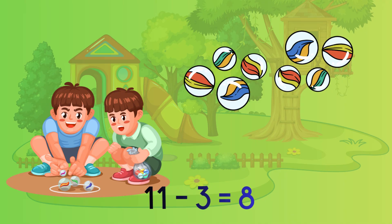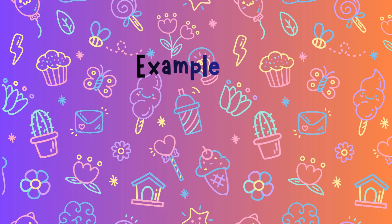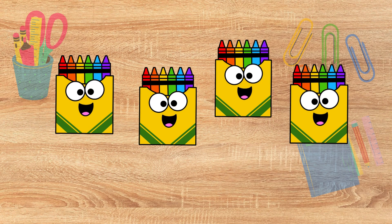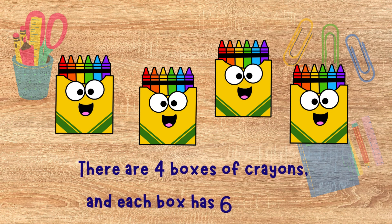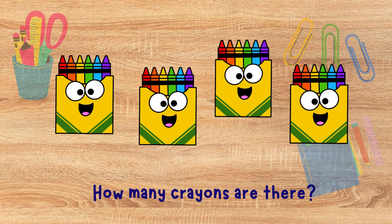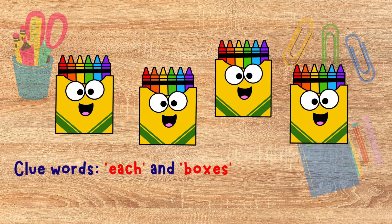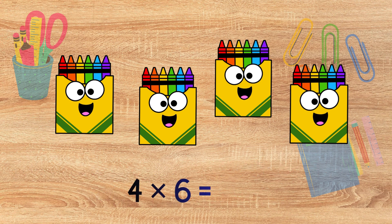Nice work! Example 3, Multiplication Problem. There are four boxes of crayons and each box has six crayons. How many crayons are there? Clue words: "each" and "boxes" — equal groups, that's multiplication. Four times six equals twenty-four. There are twenty-four crayons. Awesome!